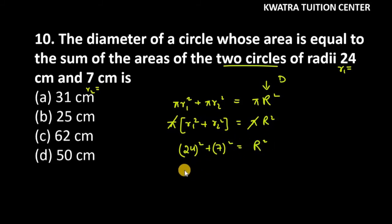24² is 576, 7² is 49. So you get 576 + 49 = 625 = R². Square root goes up on the left hand side.